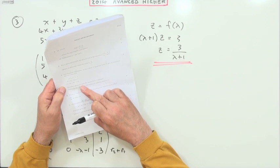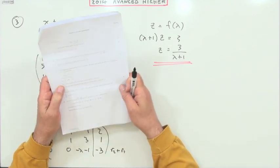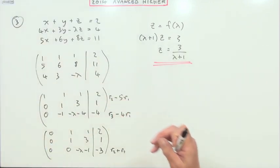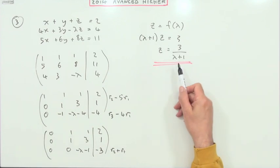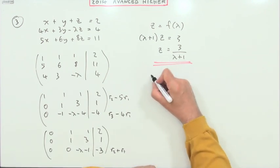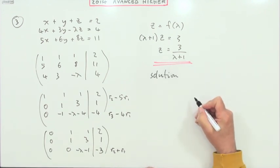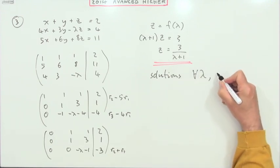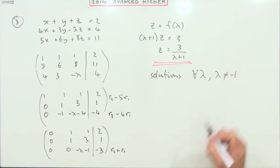The next part: for what values of lambda does this system have a solution? Obviously looking at either of these, z wouldn't exist if lambda was negative one. But it's the opposite way around, so for what values of lambda does it have a solution? Solutions for all lambda with the exception lambda not equal to negative one.